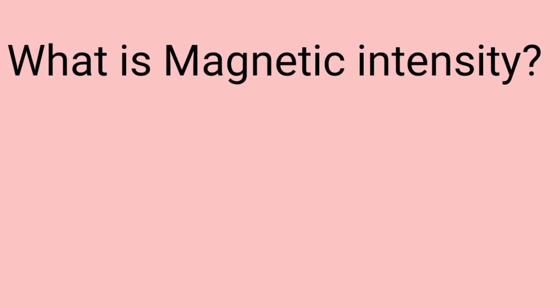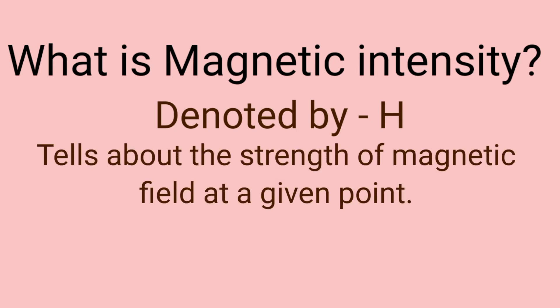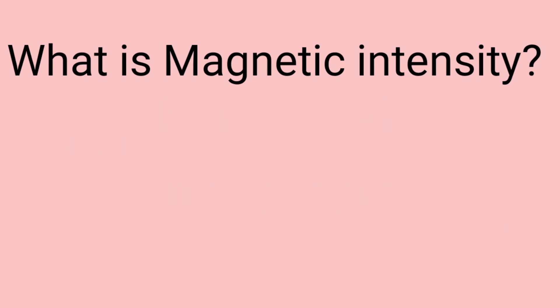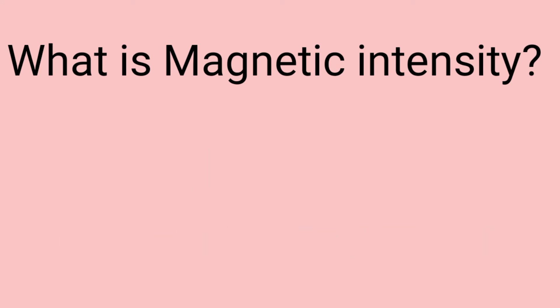The next question is: what is magnetic intensity? It is denoted by the letter H and it tells about the strength of the magnetic field at any given point. It can also be defined as the magnetic field produced by the current flowing in the turns of a solenoid, which gives us the formula H equals N times I, and the unit of magnetic intensity is ampere per meter.